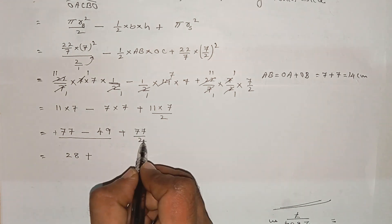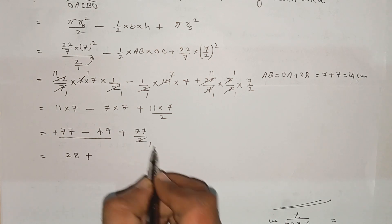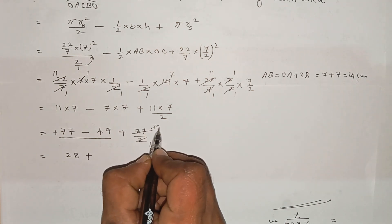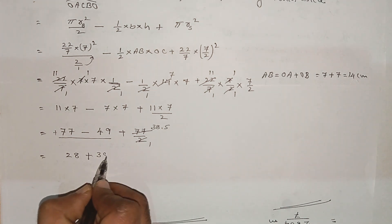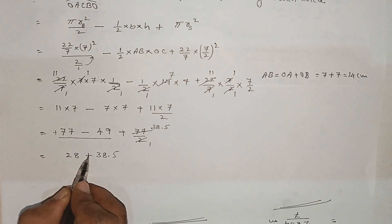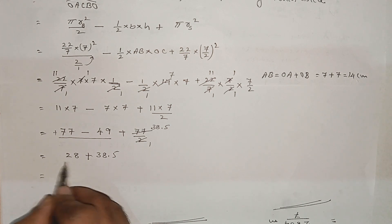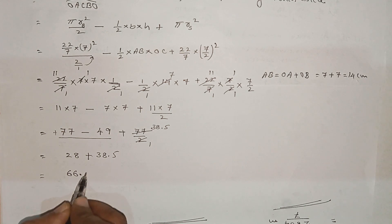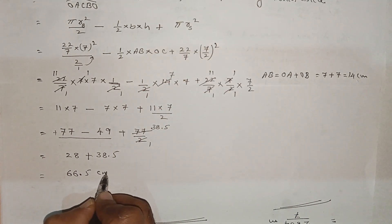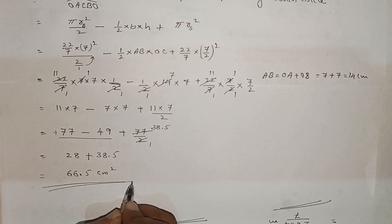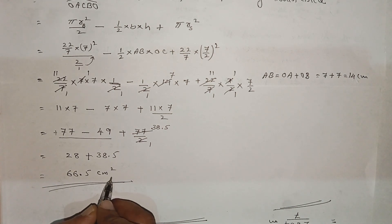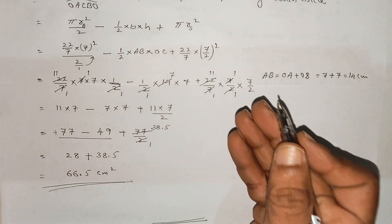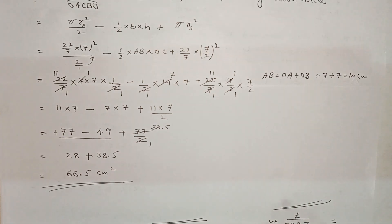Two ones are two. 77 divided, 38.5 plus 38.5, plus two, added. The answer is 66.5 cm². Problem 9 answer is 66.5 cm².